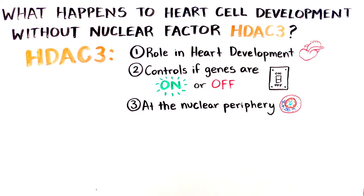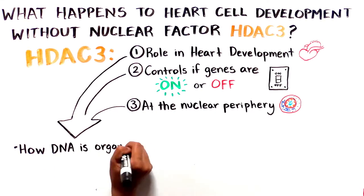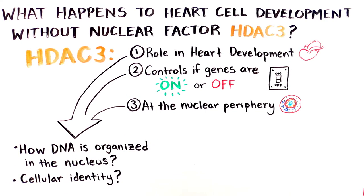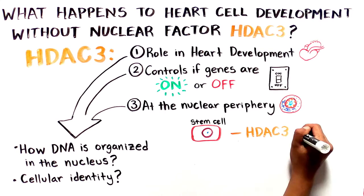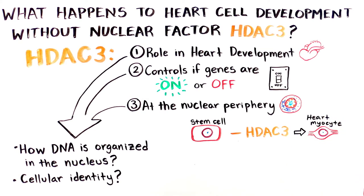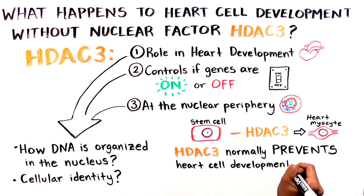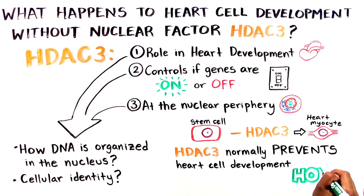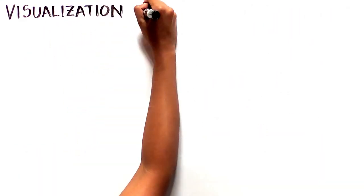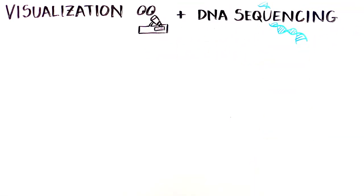The authors were determined to see if there was a link between all of these phenomena that might have something to do with how DNA is organized in the nucleus and cellular identity. To test this, the group started by deleting HDAC3 from stem cells — cells that have the potential to become any type of cell. They found that removing HDAC3 made the stem cells biased towards making heart myocytes, special muscle-like cells that allow the heart to pump.